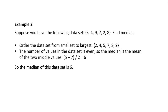Example 2: Suppose you have the following data set: 5, 4, 9, 7, 2, 8. Find median. Order the data set from smallest to largest: 2, 4, 5, 7, 8, 9. The number of values in the data set is even, so the median is the mean of the two middle values: 5 plus 7, divided by 2, equals 6. So the median of this data set is 6.